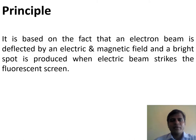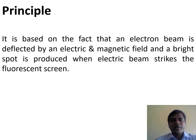The basic principle behind the working of the cathode ray oscilloscope is based on the fact that an electron beam is deflected by an electric and magnetic field, and a bright spot is produced when the electron beam strikes the fluorescent screen. The CRO is an instrument which converts electrical signals into visual signals.